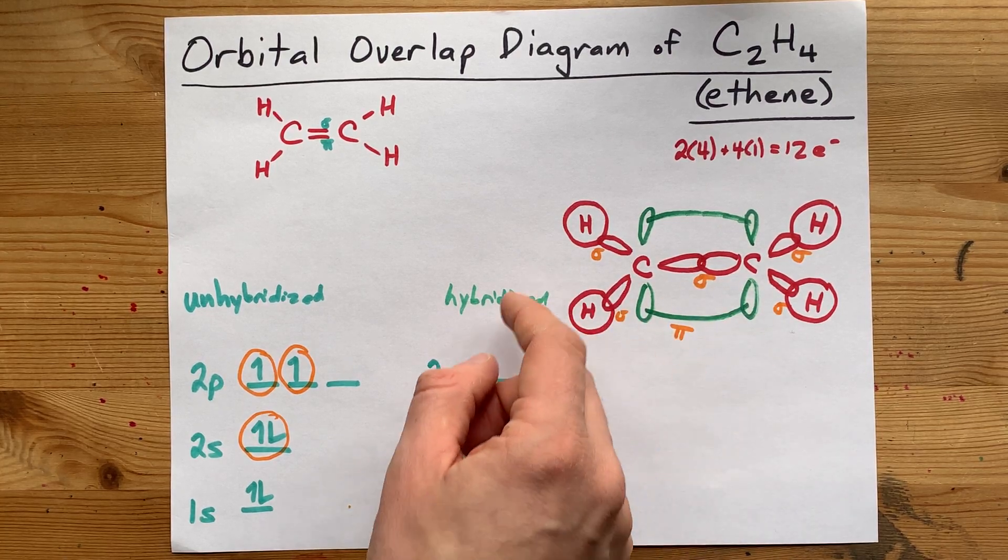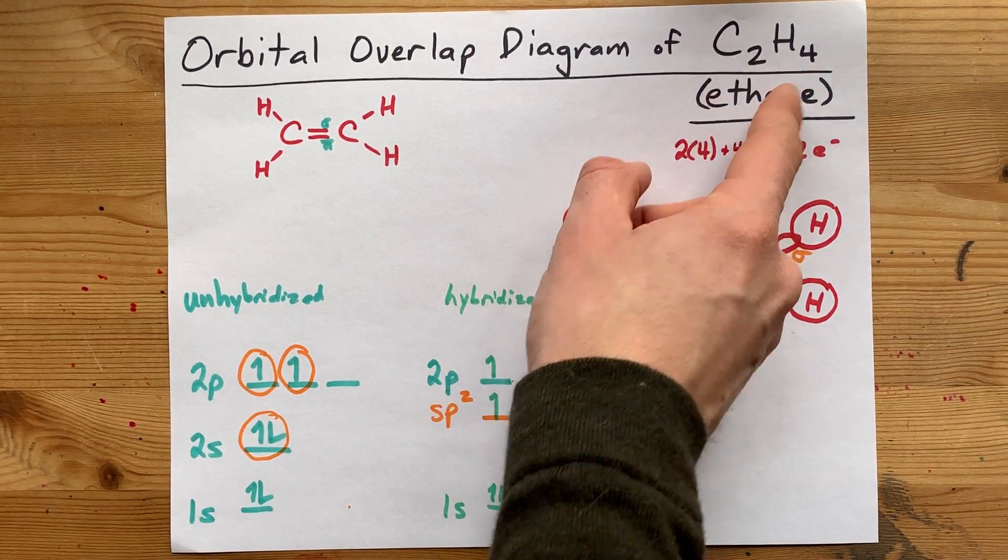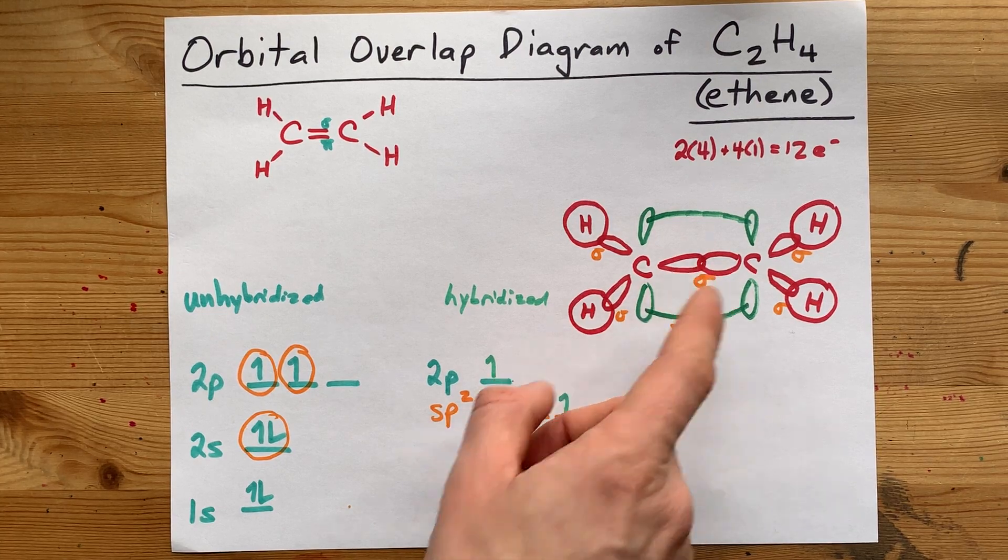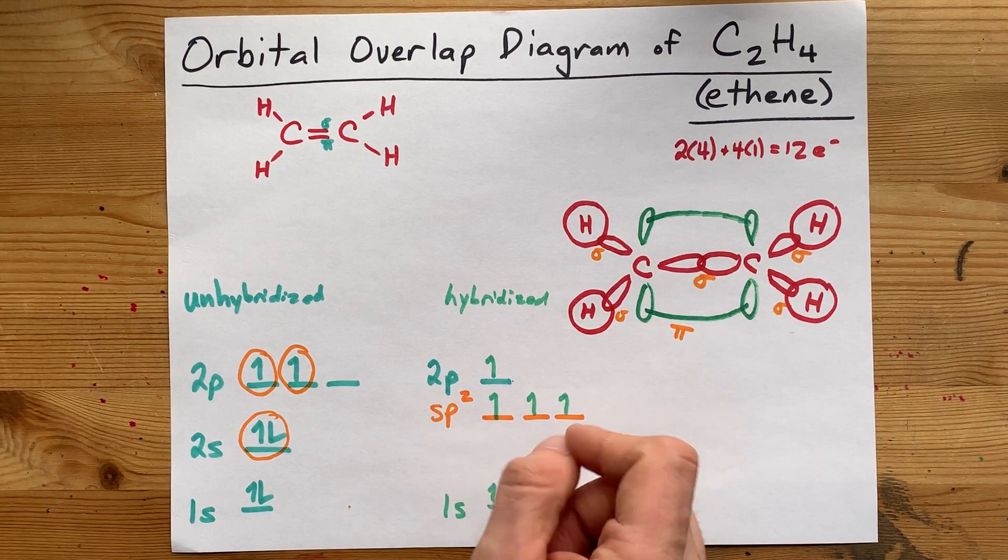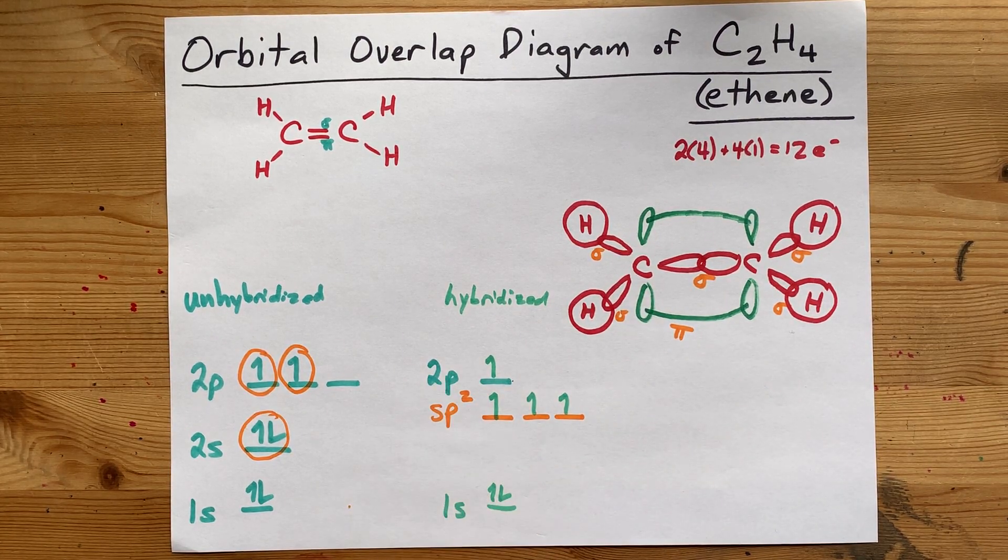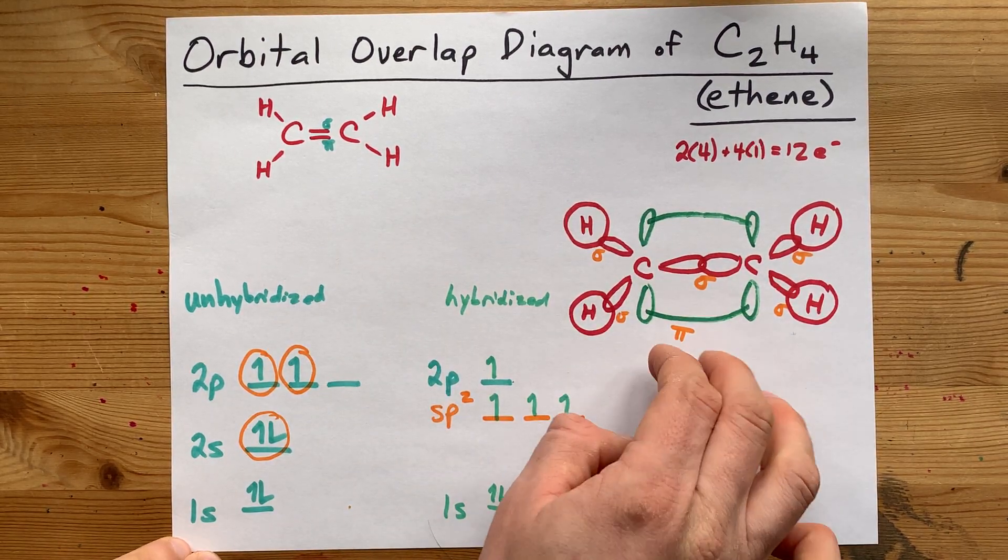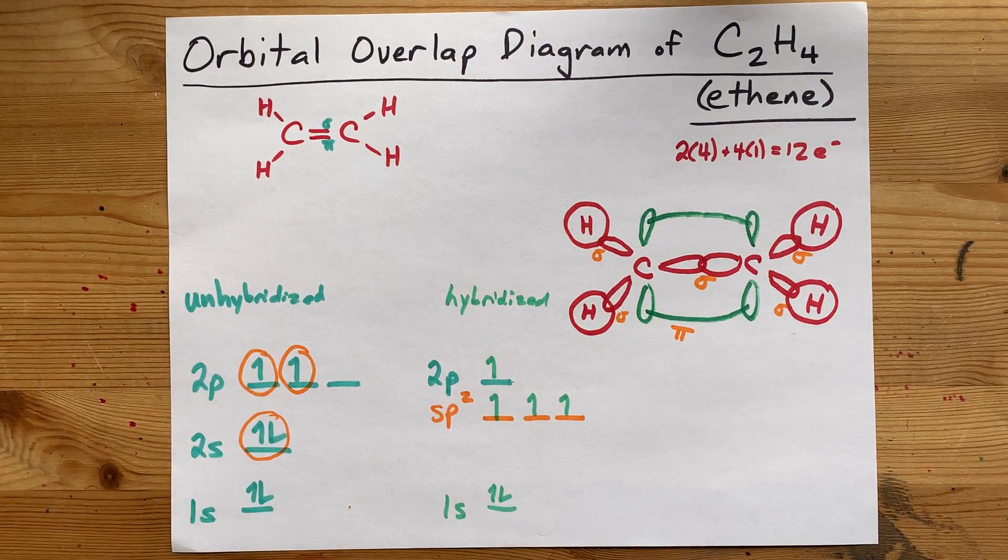You want to see this done even more complicated, look up C2H2 ethyne when you have a triple bond. Spoiler alert, you have two of these 2p orbitals left over because you need two pi bonds. Congratulations on finishing the diagram with me, and best of luck.